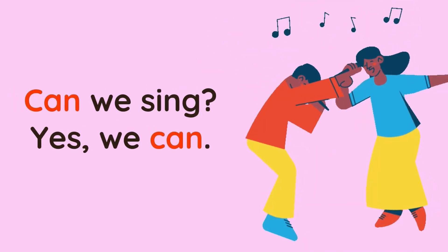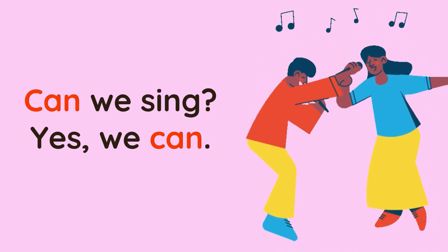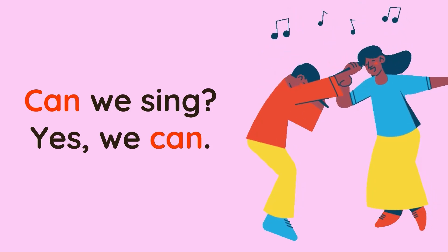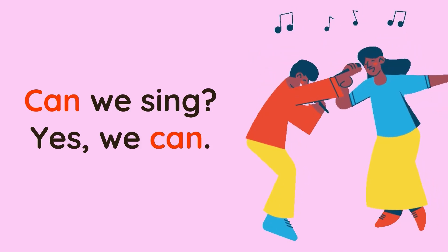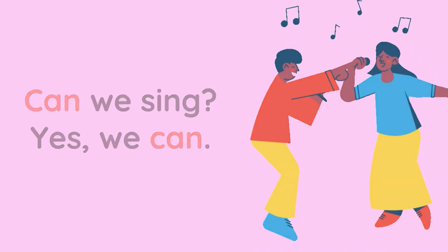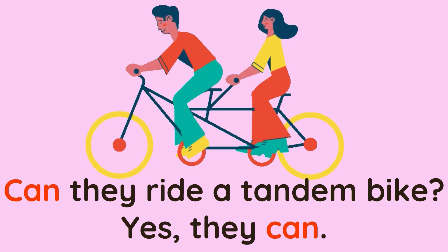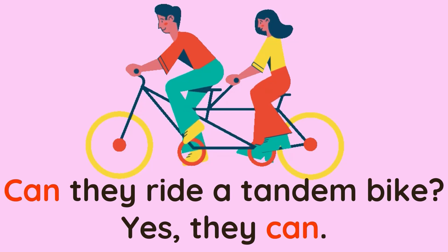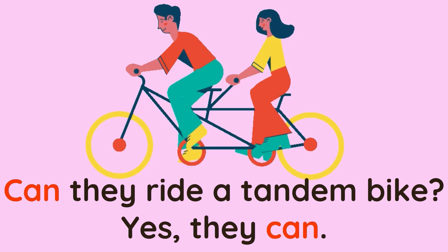Can we sing? Yes, we can. The subject for this question is we, so we put can before the subject we. The fourth example: can they ride a tandem bike? Yes, they can. The subject here is they, so we put can before the subject they.